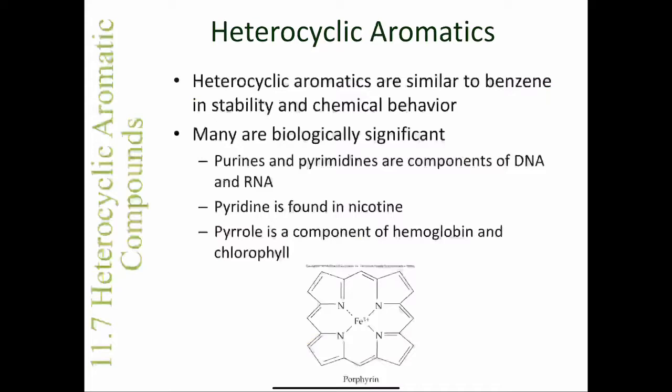DNA and RNA are the molecules responsible for storing and expressing the genetic information of an organism. The pyridine ring is found in nicotine, the addictive compound in tobacco. The pyrrole ring is a component of the porphyrin ring found in hemoglobin and chlorophyll.